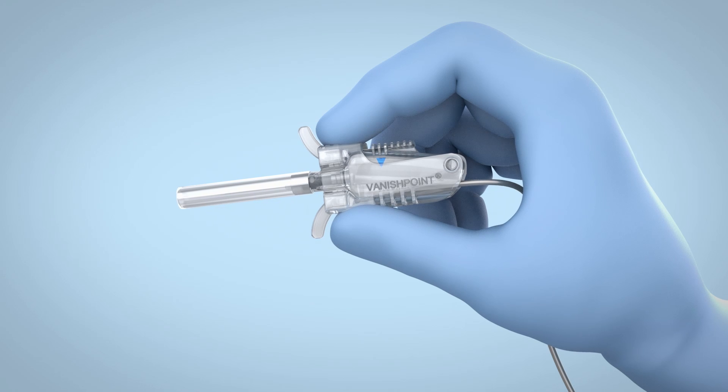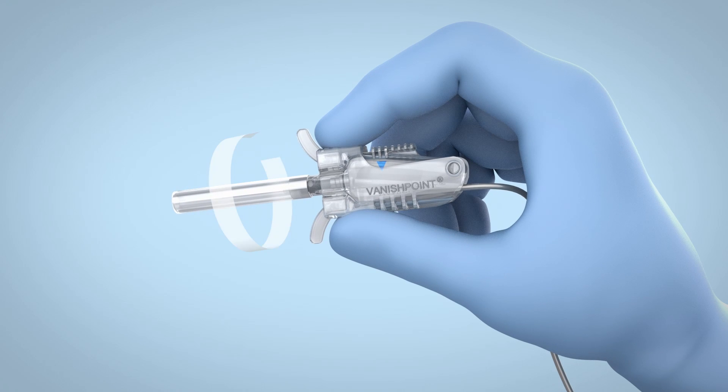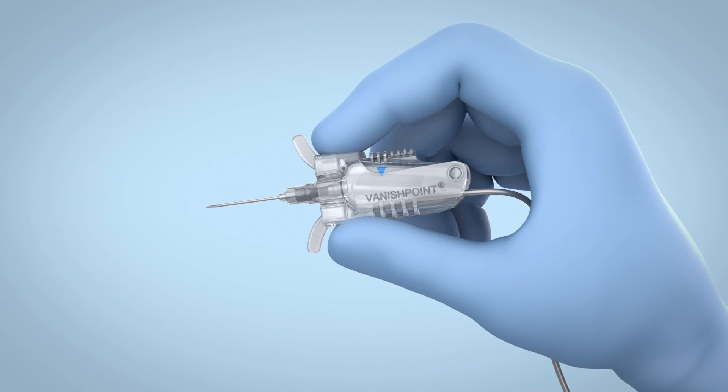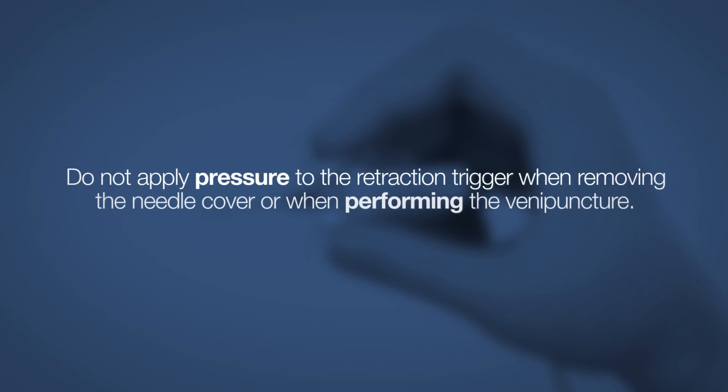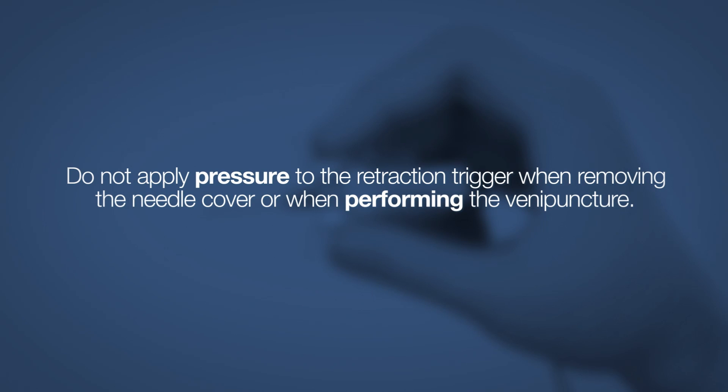Holding the device using the finger grips, carefully remove the needle cover using a twisting motion. Do not apply pressure to the retraction trigger when removing the needle cover or when performing the venipuncture.